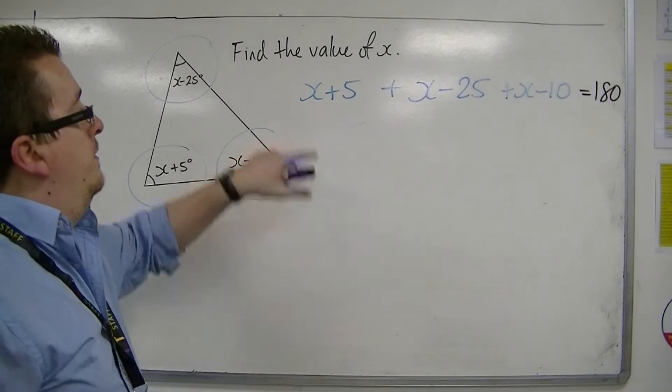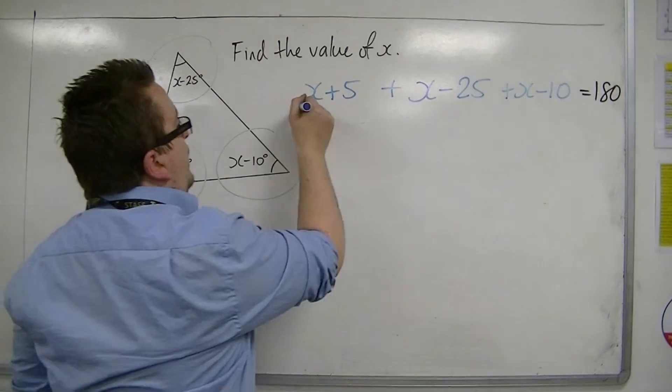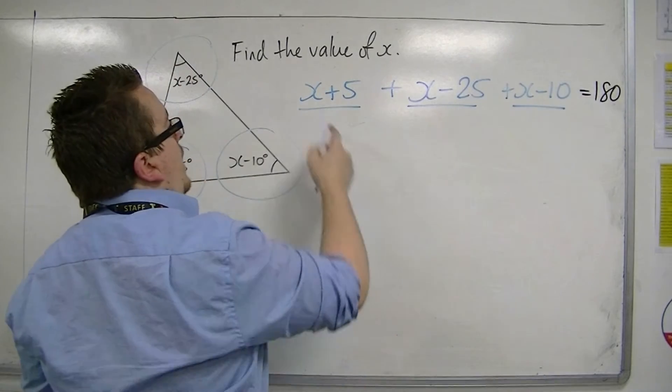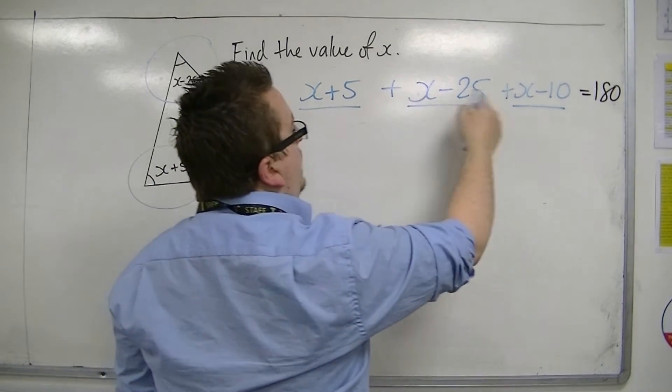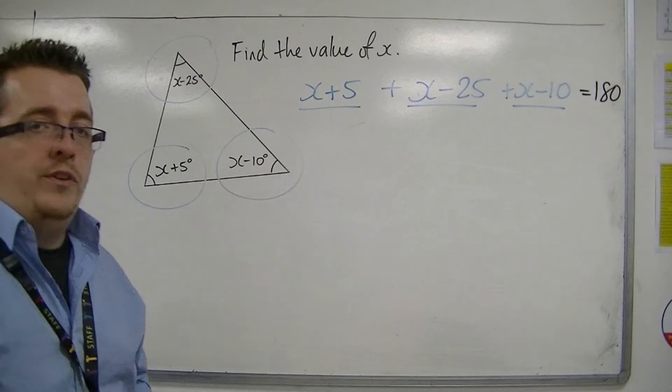So what have I got? I've got my first angle, my second angle, my third angle. I've got an x, another x, and another x. So I've got three x's altogether.